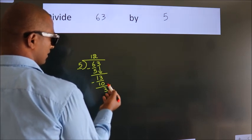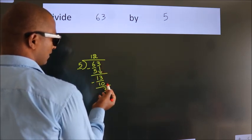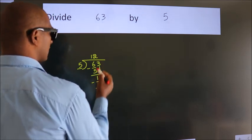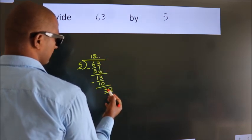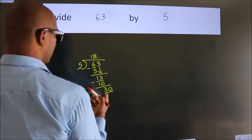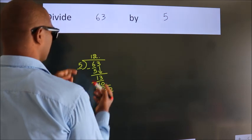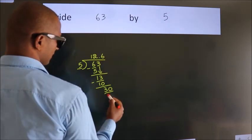After this, no more numbers to bring down. So what we do is we put dot, take 0. So 30. When do we get 30 in the 5 table? 5 times 6, 30.